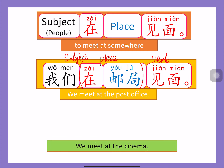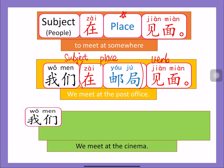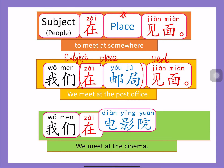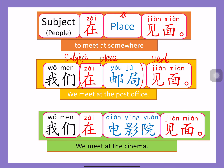想一想，中文怎么说？ We meet at the cinema. You just need to put the place as 'cinema'. So all together: 我们在电影院见面。 Now try: Mom and Dad meet at school. The answer is 妈妈和爸爸在学校见面.